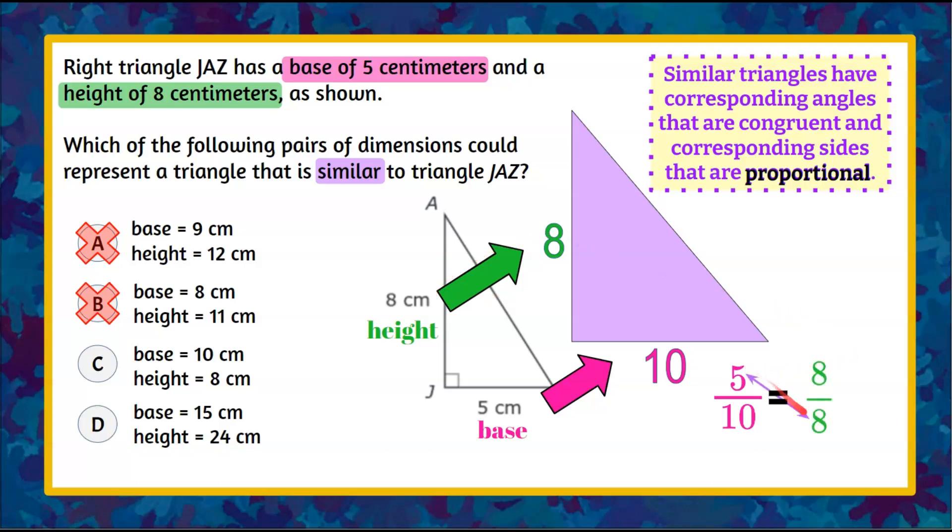Cross product property 5 times 8 is 40. Cross 10 times 8 is 80. 40 does not equal 80. Therefore we eliminate answer choice C.